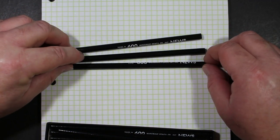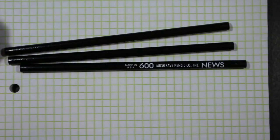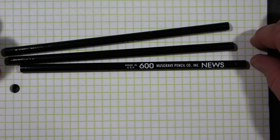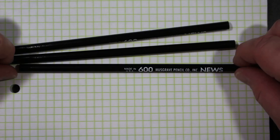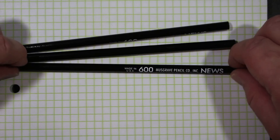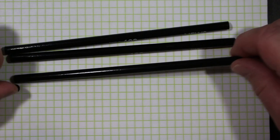And they are a round black pencil. White imprint, Made in USA, 600, Musgrave Pencil Company, Inc. News. And that's all that's there.